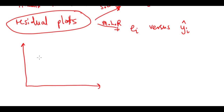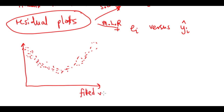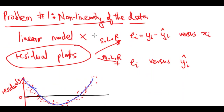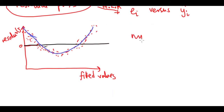What you might see when you plot residuals versus fitted values is a clear pattern. If this is the zero line for zero residuals, you might see a clear pattern around it. If there is a clear pattern, it means something is going on in the data and we may need to use non-linear models.